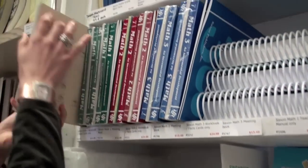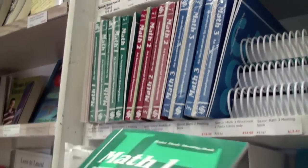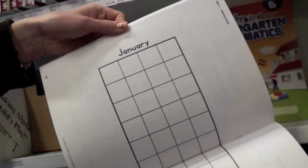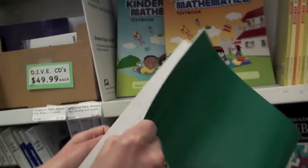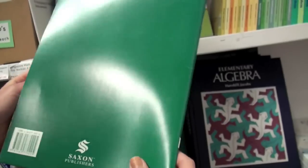There's also something called a meeting book. That book has graphs and calendars and the different charts that you'll be using with your lessons. Here's a calendar for graphing the weather. Here's shapes, dates, you get the idea.